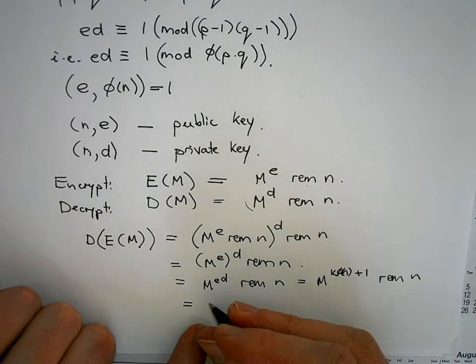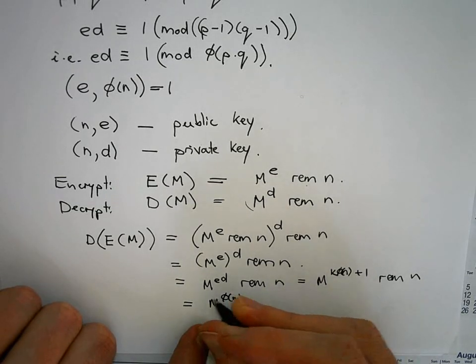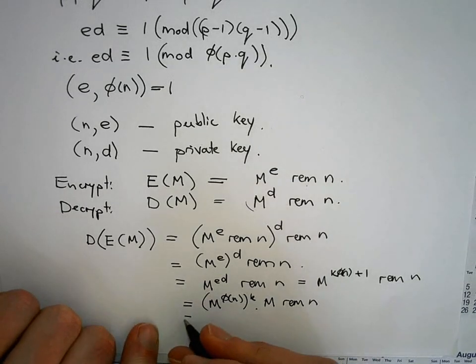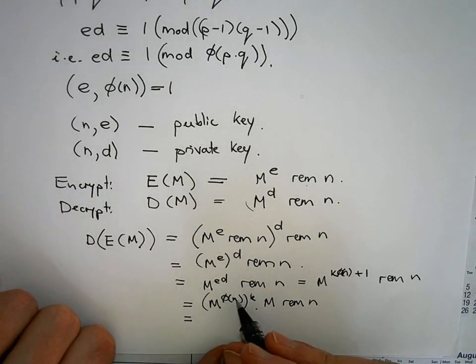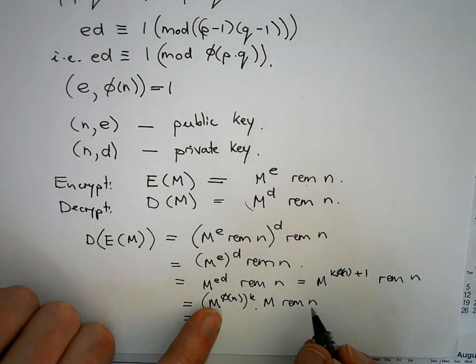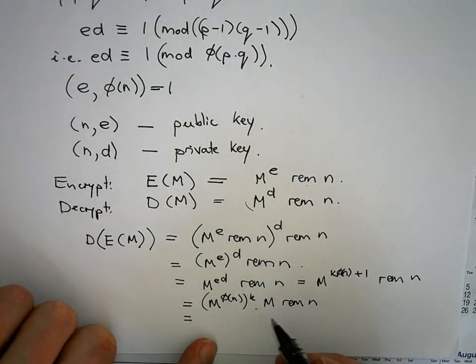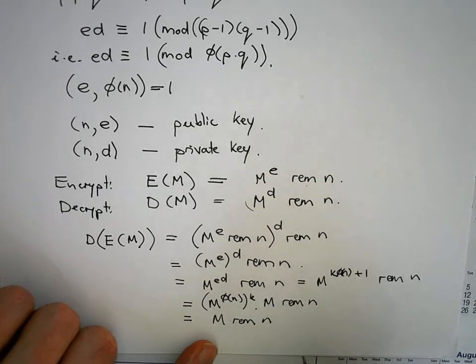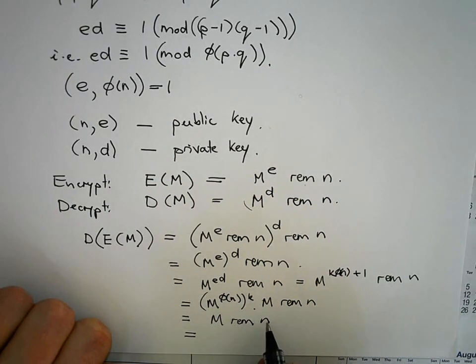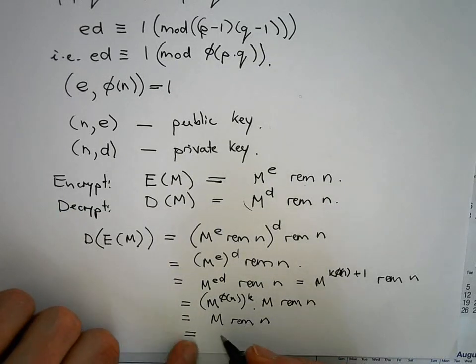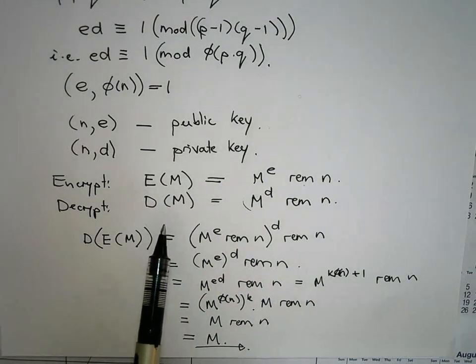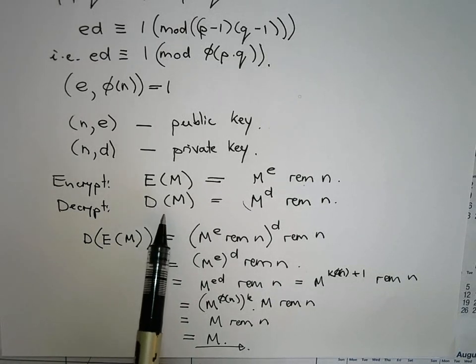Okay. Well, then that becomes M to the phi of N all to the power of k times M, just applying my laws of exponents over there. Now, this M to the phi of N, now we recall Euler's theorem. Now, M and N are relatively prime. So this to the power of phi of N should give me one. So this becomes one to the power of k, which is just one. This gives me M remainder N and because we only encrypt messages which are strictly smaller in their numerical representation than N, the remainder after I divide M by N is just simply M. M is something smaller than N. So this just gives me M. So indeed these two functions, the encrypt and the decrypt function, the public and the private keys are inverses of each other.